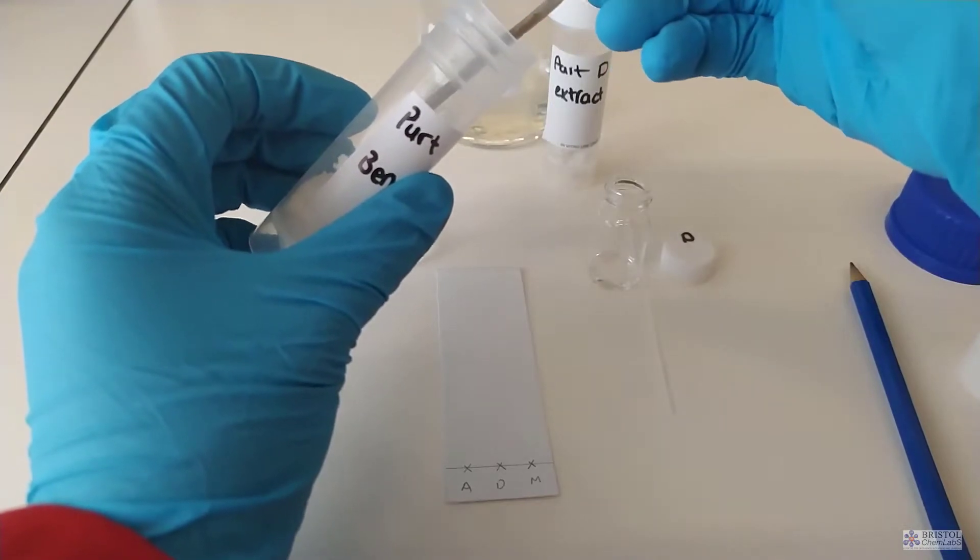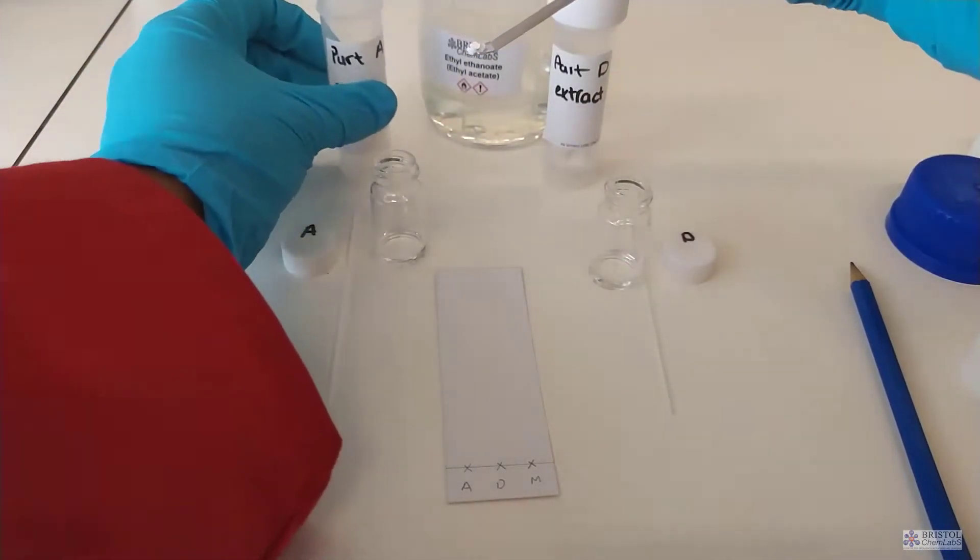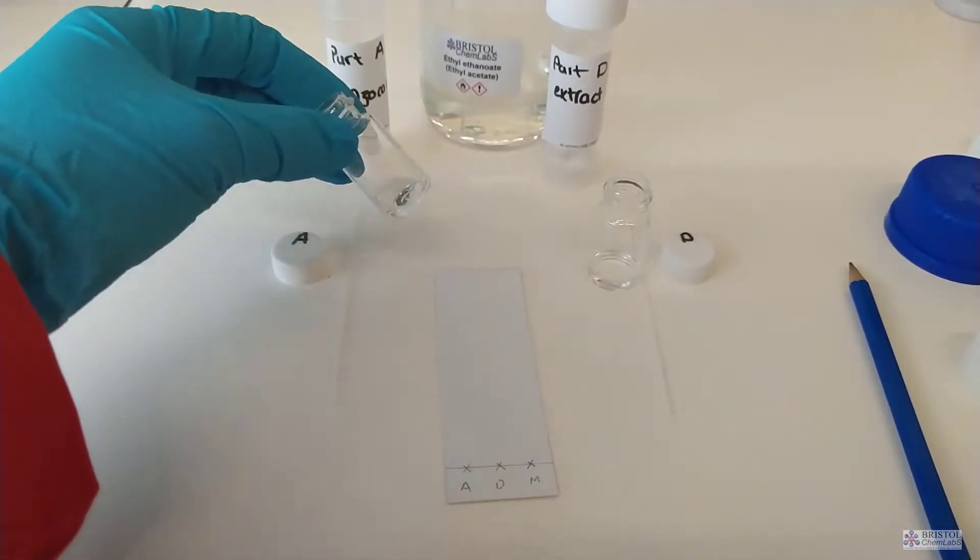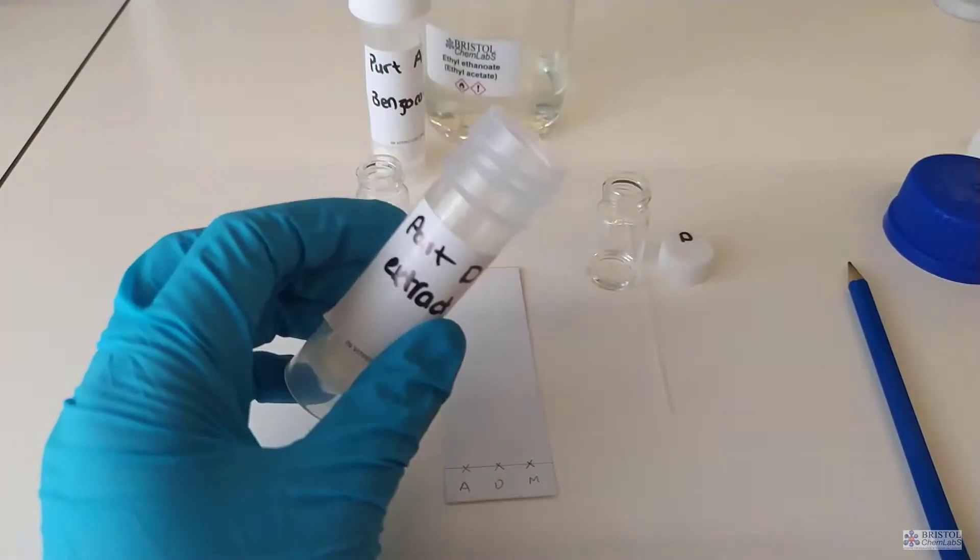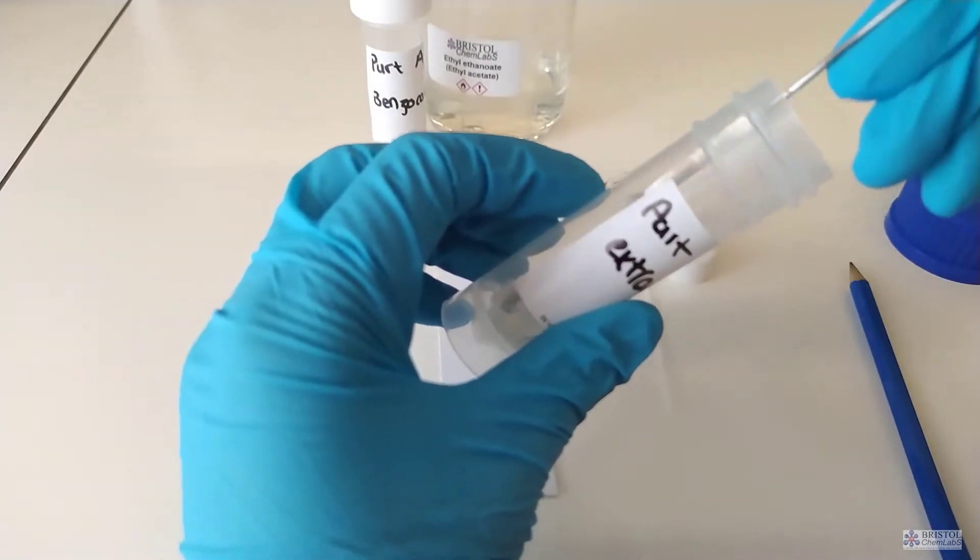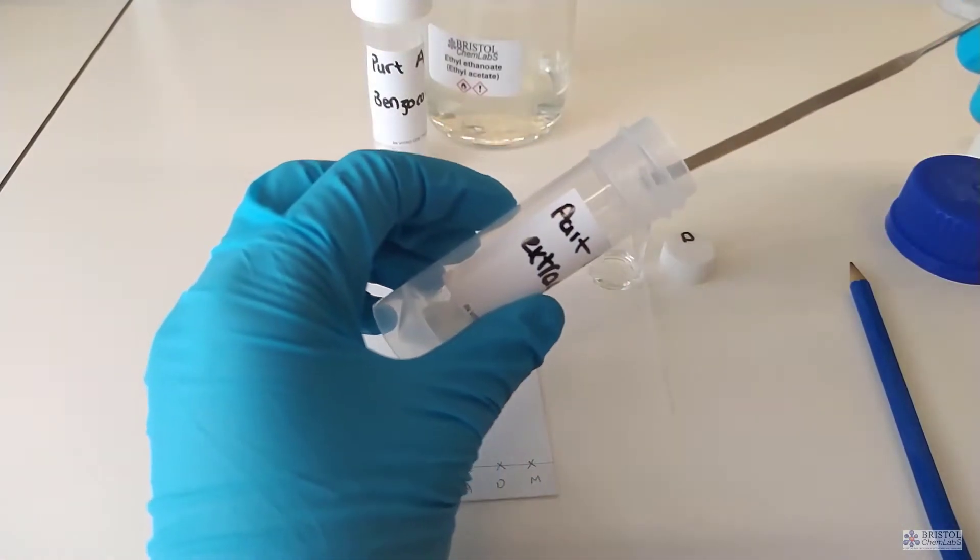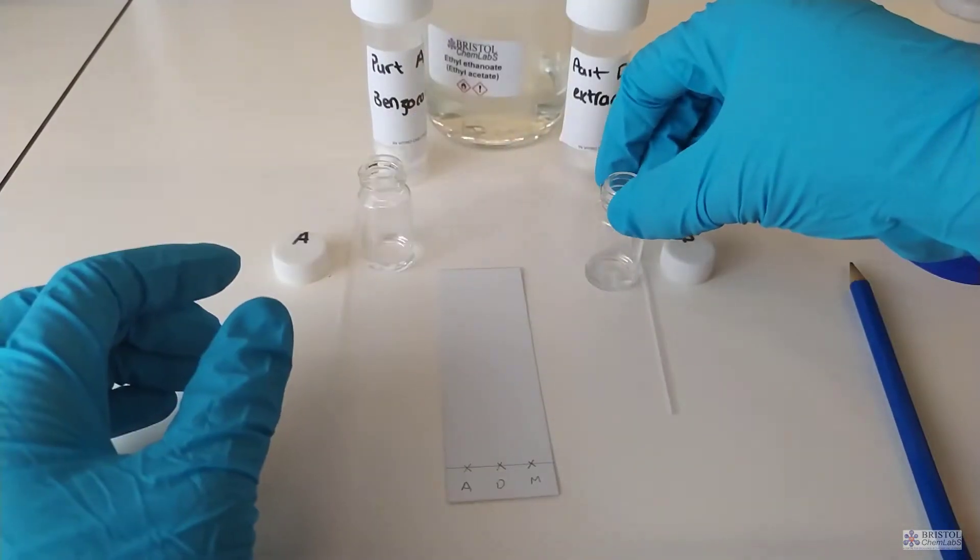Make up some solutions of the samples under test. Here we're going to make a solution of pure benzocaine and the benzocaine produced in the reaction. We dissolve up small amounts of our sample into an appropriate solvent such as ethyl ethanoate.